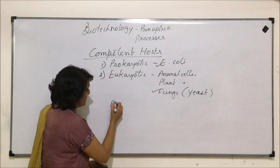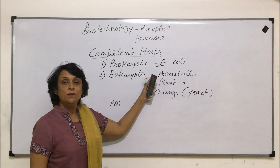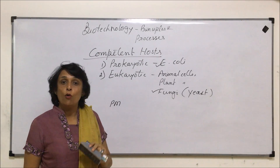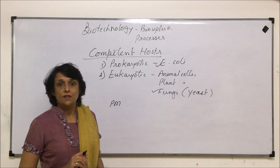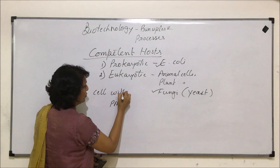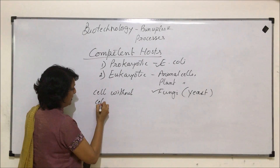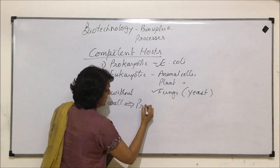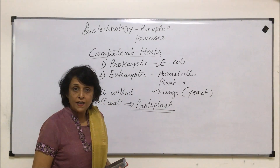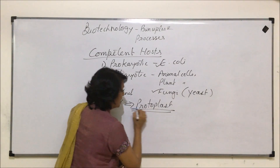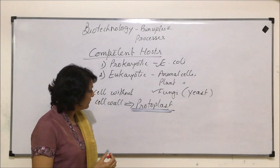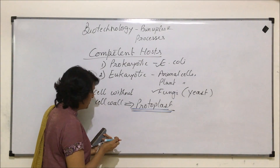To make cells competent, the first thing is that the plasma membrane should be exposed. In the case of animal cells there is only a plasma membrane, but in E. coli, plant cells, and fungi there is a cell wall outside. So we need to remove the cell wall. A cell whose cell wall has been removed is known as a protoplast. So for plant cells, fungal cells, or E. coli, we first need to create a protoplast by dissolving the cell wall around it.